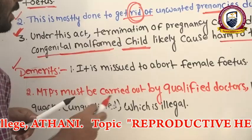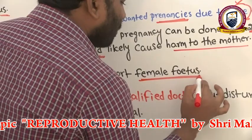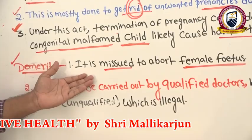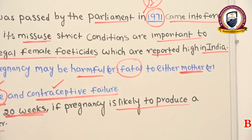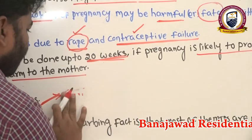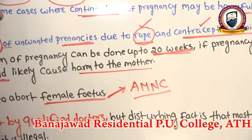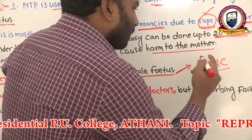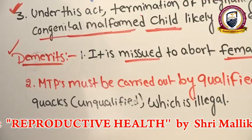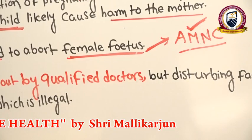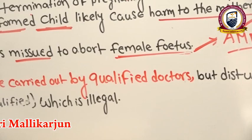The demerits of MTP: it is misused to abort female fetuses — a practice called female feticide, which is high in India. Doctors use amniocentesis to determine the sex of the fetus, and if the baby is female, some people request termination because they do not want a female child.